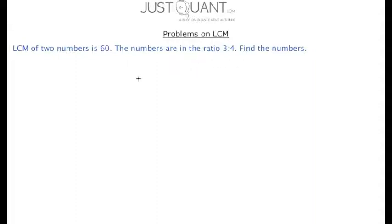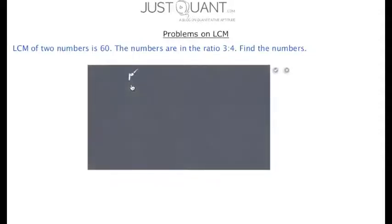Let's solve our first problem. The LCM of two numbers is 60 and the numbers are in the ratio 3:4. Find the numbers. In order to solve this, let's assume that the two numbers are n1 and n2, and it is given that n1:n2 = 3:4. Hence n1 can be written as 3x and n2 can be written as 4x.